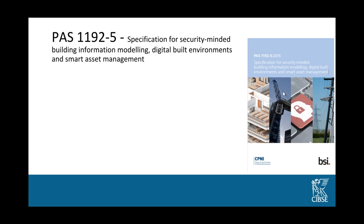Some time ago British Standards created a PAS called PAS 1192 Part 5. The 1192 series of publicly available specifications and standards defines what building information modeling is in the UK, and is the definition in whole or in part of what the BIM Level 2 procedure is supposed to be. This specification is intended for security-minded building information modeling — thinking about how to secure the information we create, the sharing of it, and also taking a wider look at how the physicality of our constructed spaces interacts with security aspects.